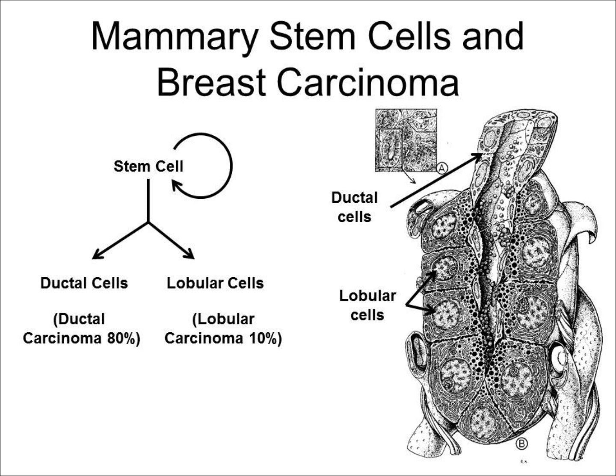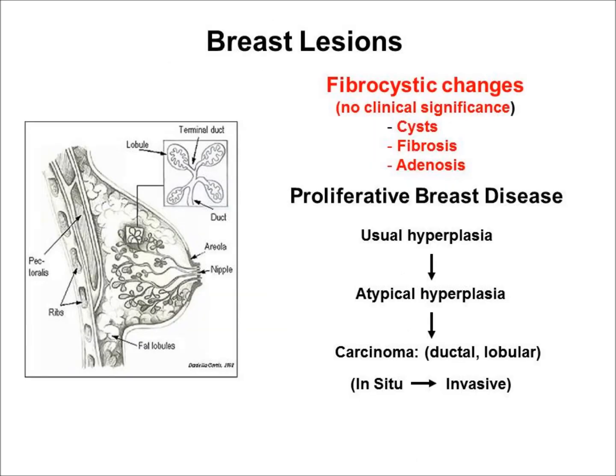In this laboratory, you will be examining only ductal carcinomas. However, you should be aware that lobular carcinomas also exist. As illustrated in this chart, there are two major categories of breast lesions: fibrocystic changes and proliferative breast disease. Fibrocystic changes may cause discomfort but are not particularly serious. These include cysts, which are dilations of the duct due to a blockage; fibrosis, which is an abnormal increase in connective tissue; and adenosis, which is an increase in the number of glandular cells. The second category, proliferative breast disease, is of greater concern. This represents a spectrum of conditions ranging from usual ductal hyperplasia to invasive carcinoma.